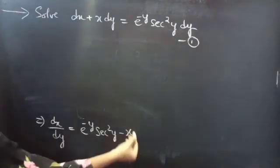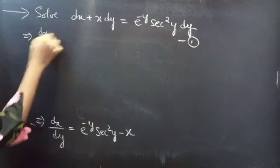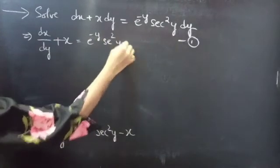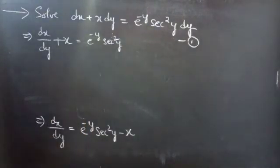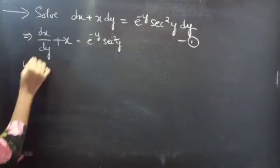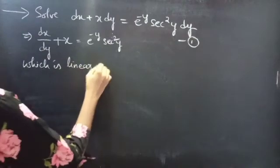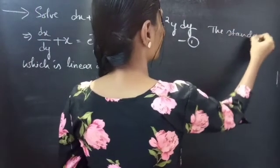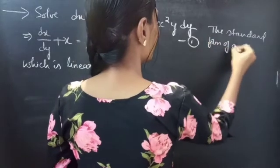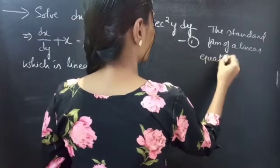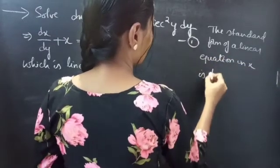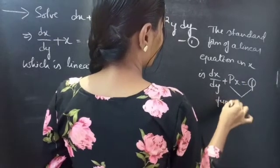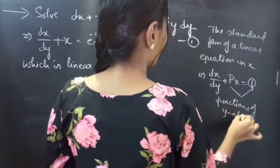Now bring this minus x to the LHS. You will get dx by dy plus x equals to a function of y, which is linear in x. We know that the standard form of a linear equation in x is dx by dy plus p times x equals to q, where p and q are functions of y alone or constants.